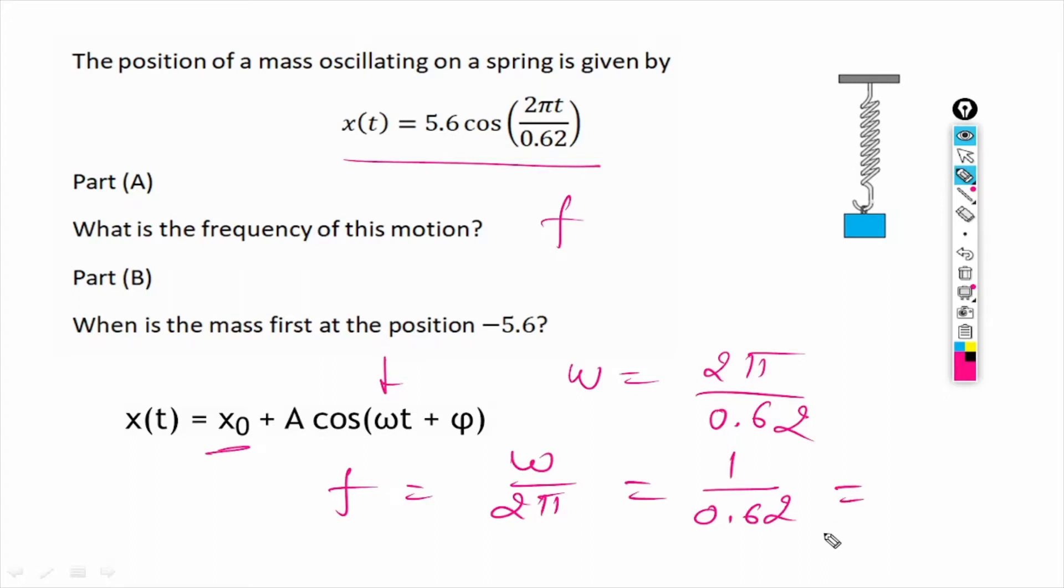So we will get frequency is 1 over 0.62, which equals 1.6129. And if we round it to two decimal places, then we get f equals 1.61.